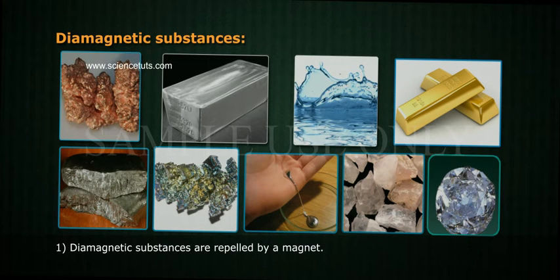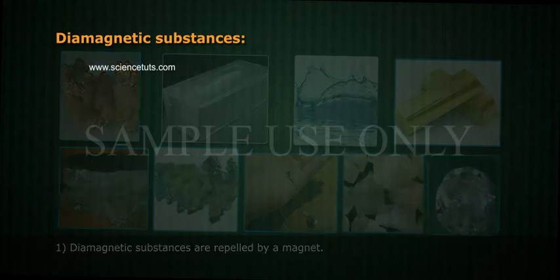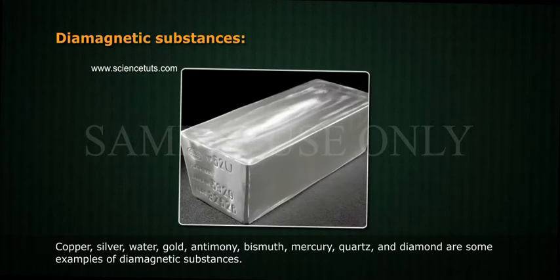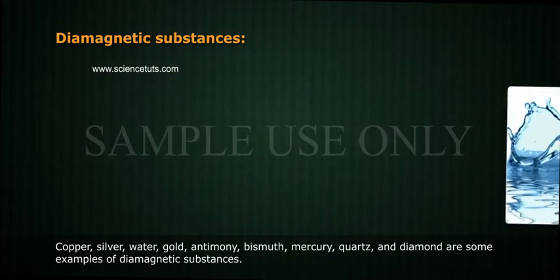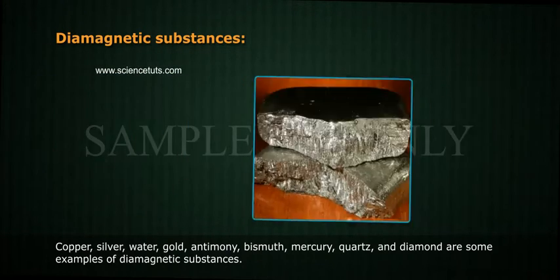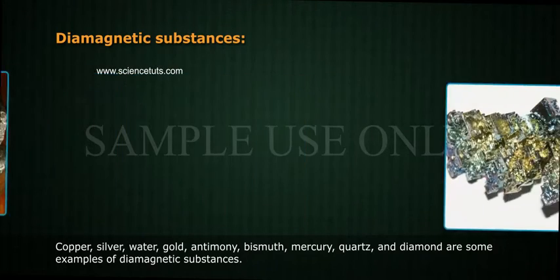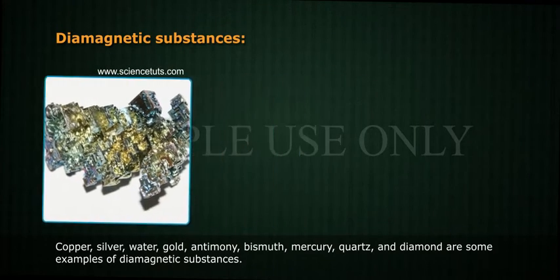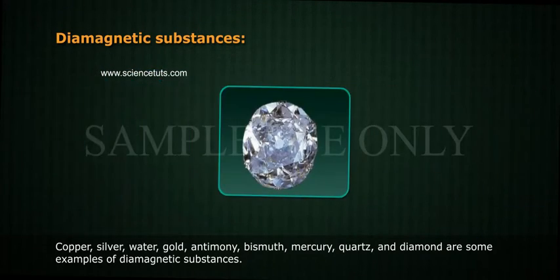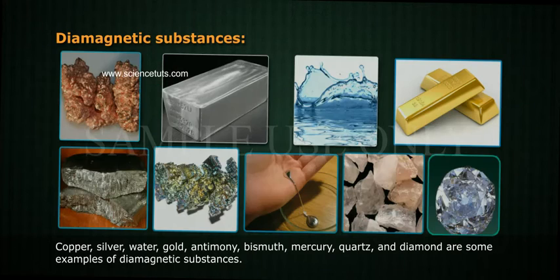Diamagnetic substances are repelled by a magnet. Copper, silver, water, gold, antimony, bismuth, mercury, quartz, and diamond are some examples of diamagnetic substances.